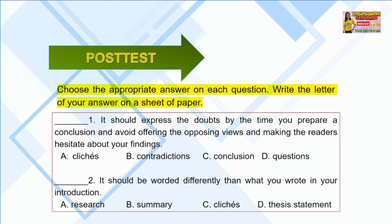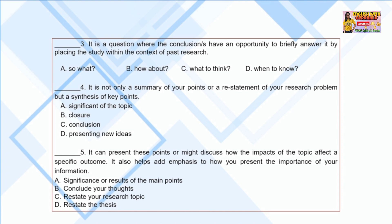Number 2: It should be worded differently than what you wrote in your introduction. A. Research, B. Summary, C. Clichés, D. Thesis Statement. Number 3: It is a question where the conclusion has an opportunity to briefly answer it by placing the study within the context of past research. A. So what? B. How about? C. What to think? D. When to know?